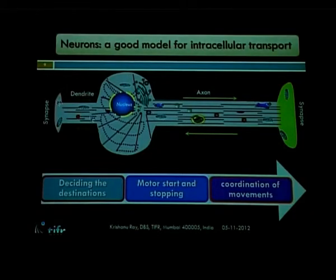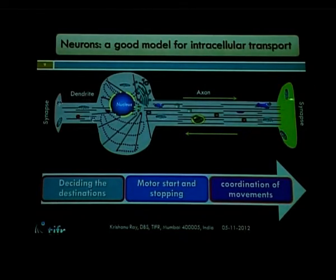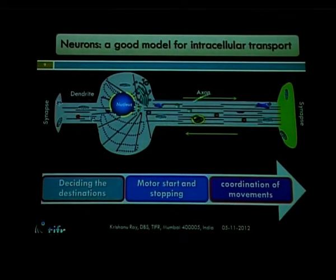One can use the neuronal system, which is essentially one-dimensional: all microtubule plus ends are oriented toward the synapse and minus ends toward the cell body. Traffic moves either toward the synapse or back from it. One can therefore ask how different cargos are sorted, sent toward the presynaptic compartment, and then brought back to the cell body.